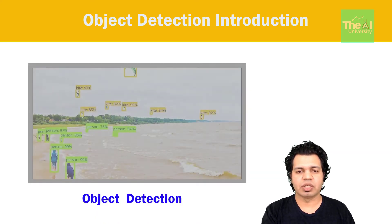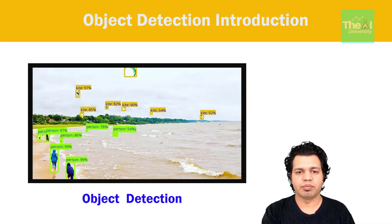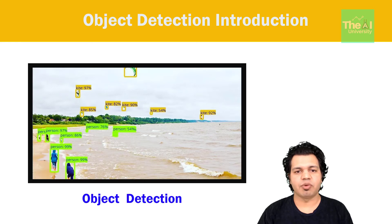Object detection on the other hand takes an image as an input and produces one or more bounding boxes with a class label attached to each bounding box. Object detection makes use of image classification and object localization techniques by first predicting the type or class of an object in an image and then locating the presence of an object in an image and indicating its location with a bounding box.